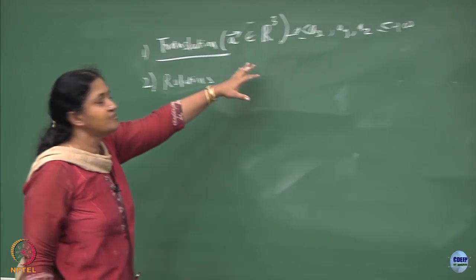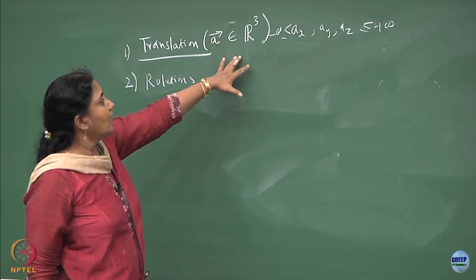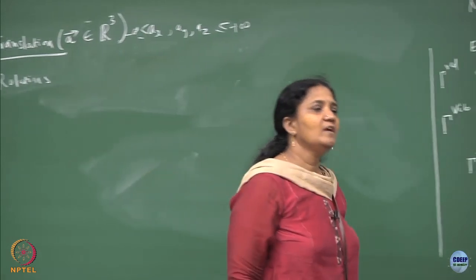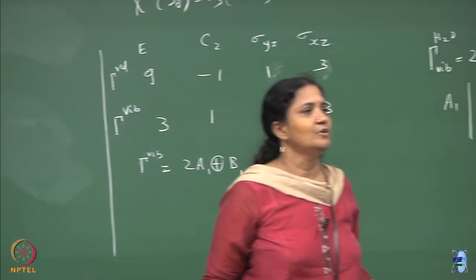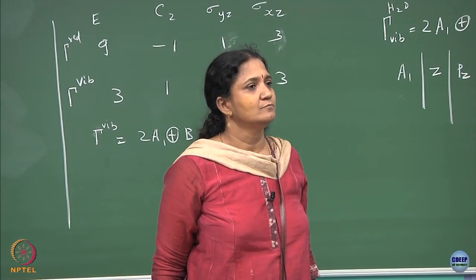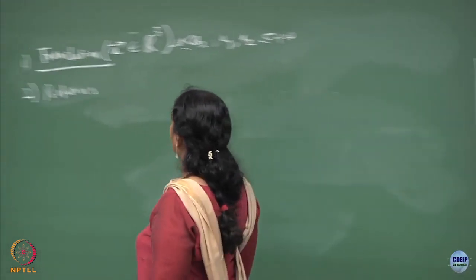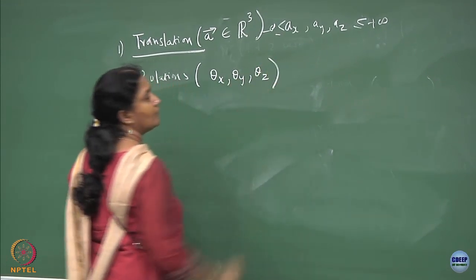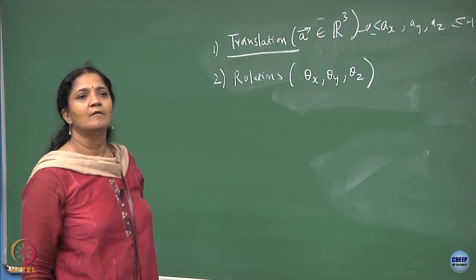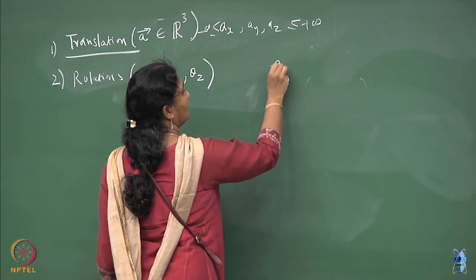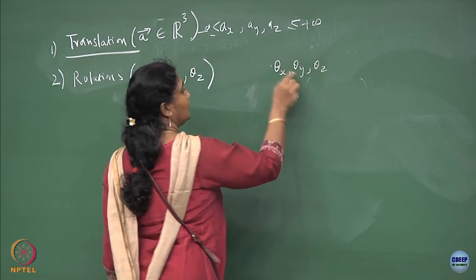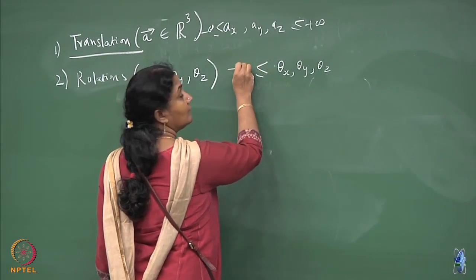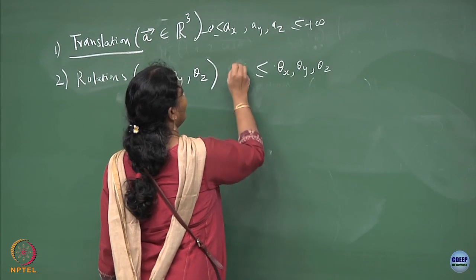This is like a 3-dimensional unbounded space: a translation ax on an object can be any value between minus infinity and plus infinity. Similarly, rotations involve θx, θy, θz — the rotation about the x, y, and z axes — where the values lie between 0 and 2π.